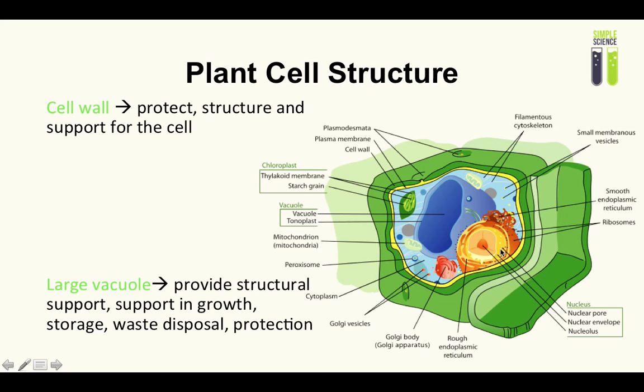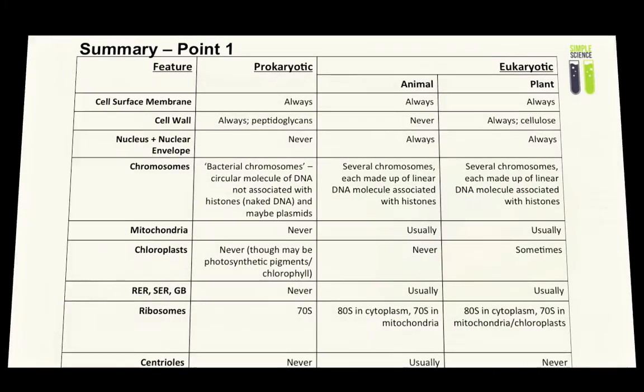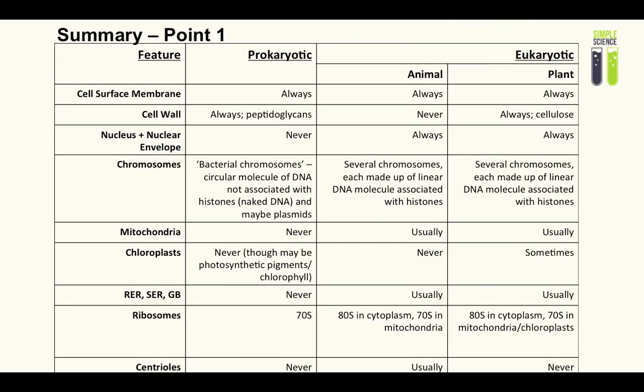That is it, we have covered all of the organelles which you need to know for your exam. Now let's check out the summary point. The first summary point distinguishes between prokaryotic and eukaryotic features. It is a table summary; I'll just give you a second to note it. Now that you've screenshot it, take this table down and memorize it. It literally summarizes what I've been talking about.